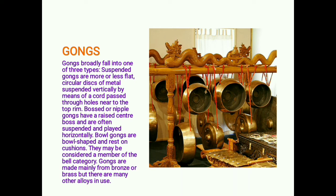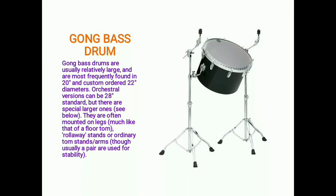Gongs broadly fall into one of three types: suspended gongs, which are more or less flat circular disks of metal suspended vertically by a cord through holes near the top rim; bossed or nipple gongs, which have a raised center boss and are often suspended and played horizontally; and bowl gongs, which are bowl-shaped and rest on cushions and may be considered a member of the bell category. Gongs are made mainly from bronze or brass, though many other alloys are in use.